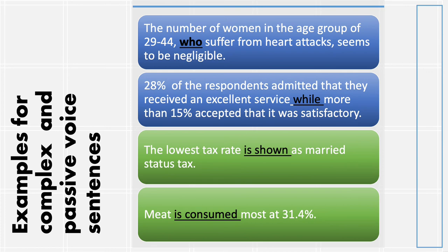Here are some examples of complex and passive voice structures you can use in your writing. One way of constructing complex sentences is using subordinating conjunctions such as after, although, as, because, before, how, if, once, since, than, that, though, till, until, when, where, whether, while, etc. The other way is the use of relative pronouns such as that, which, who, whom, and whose.